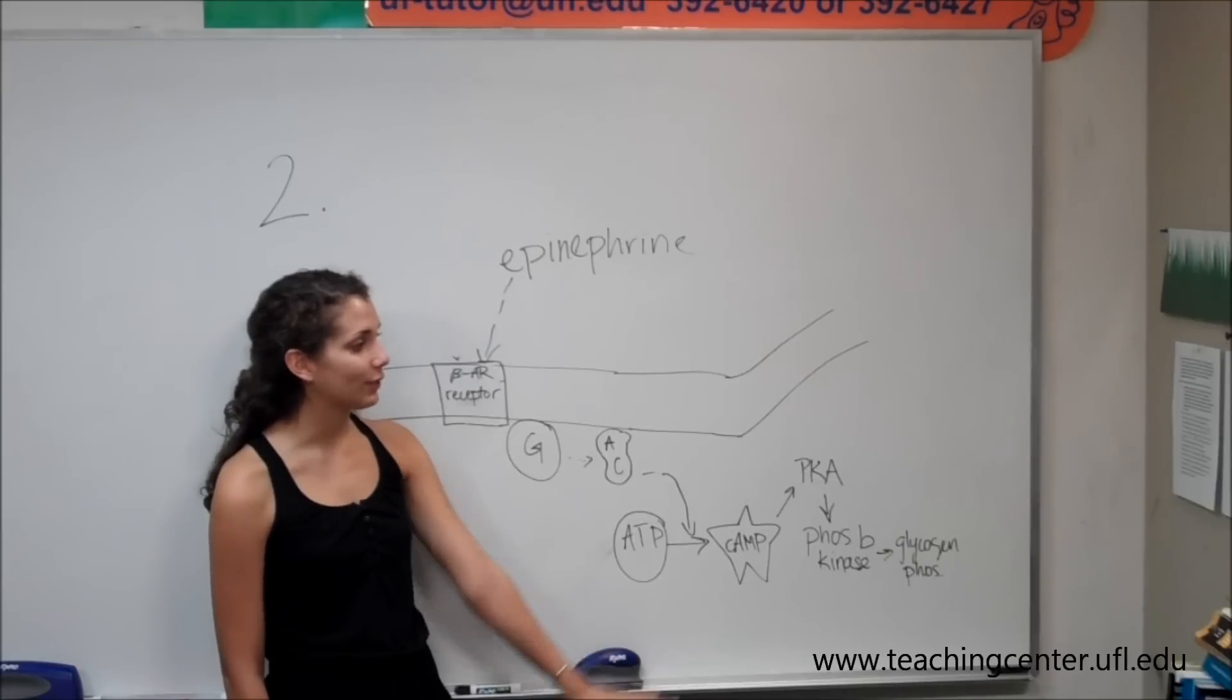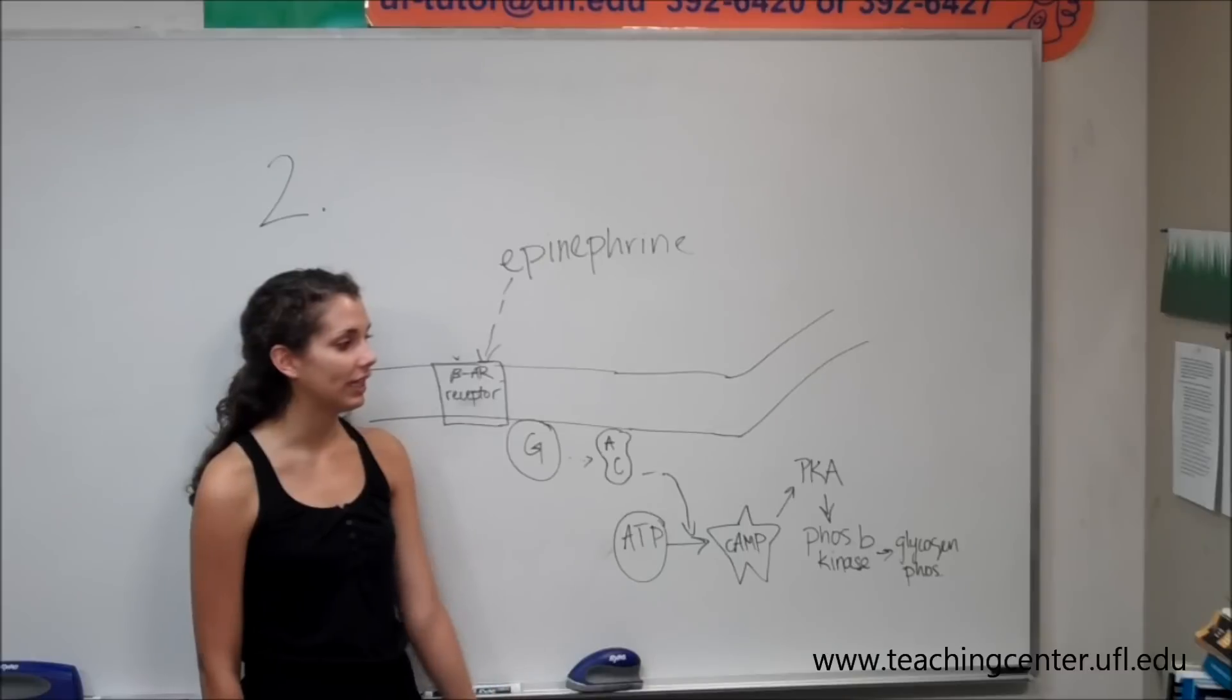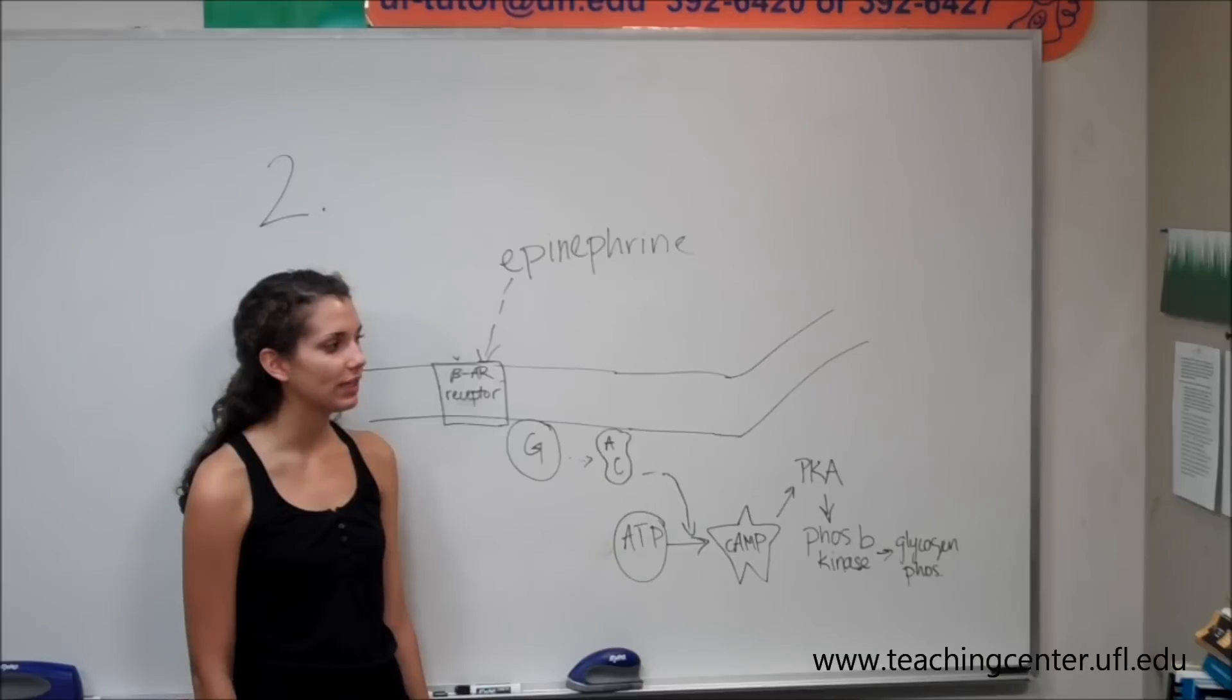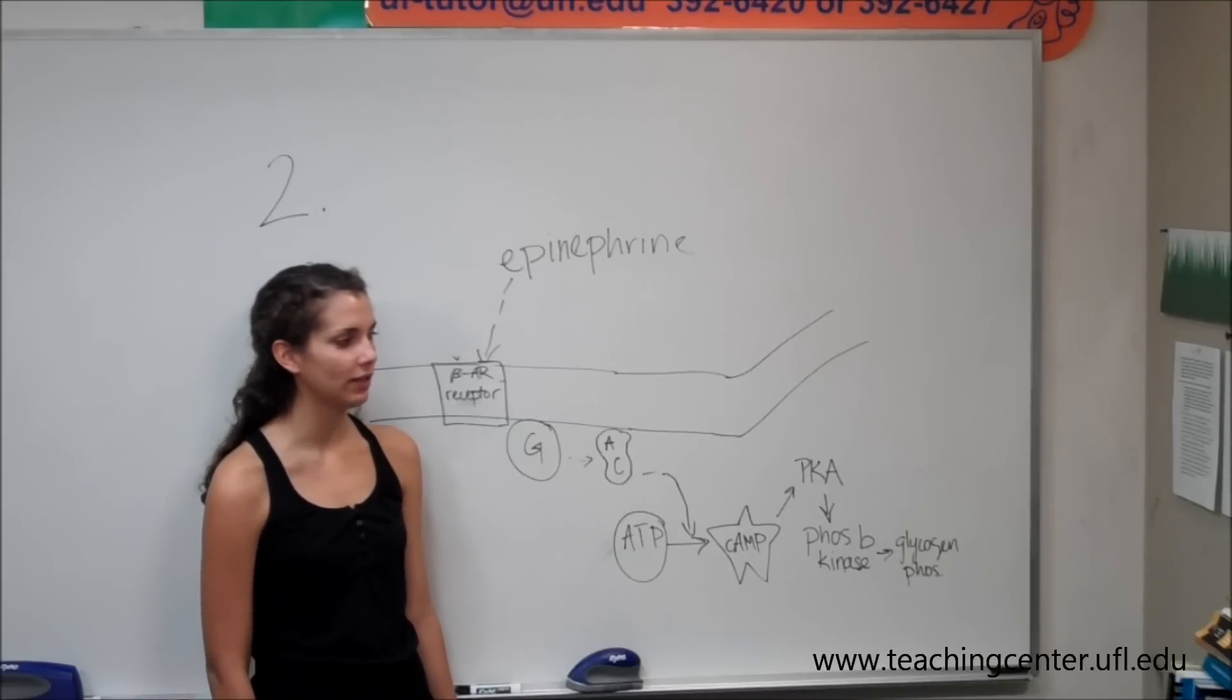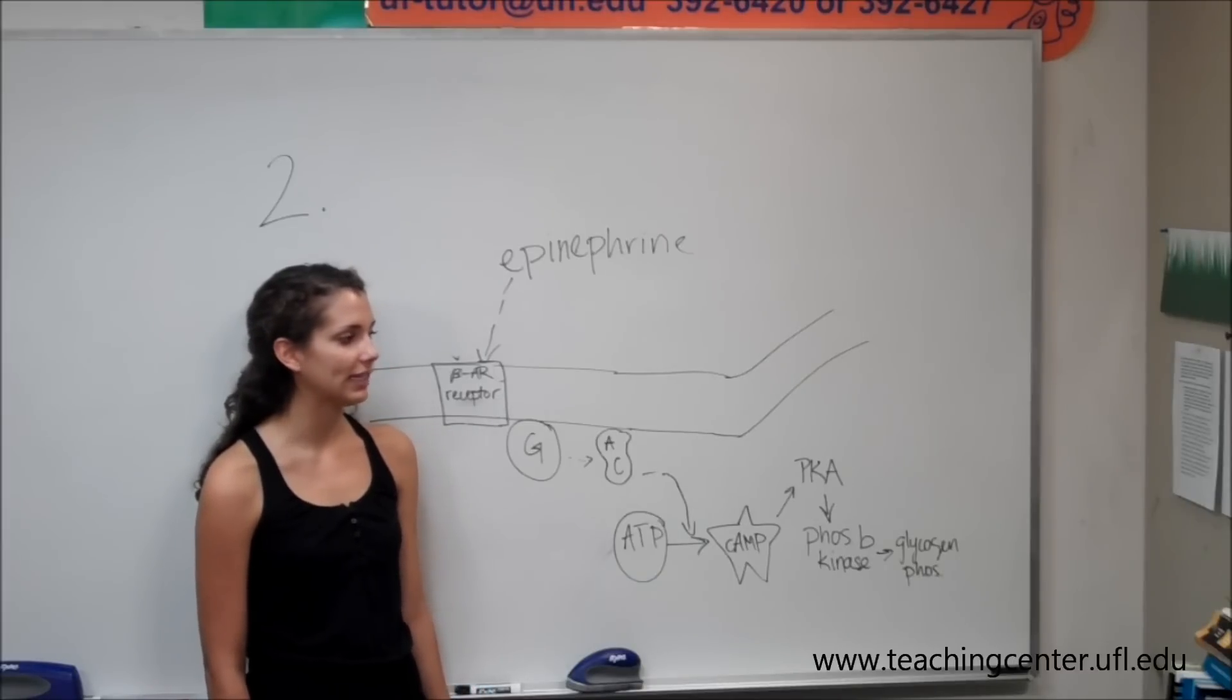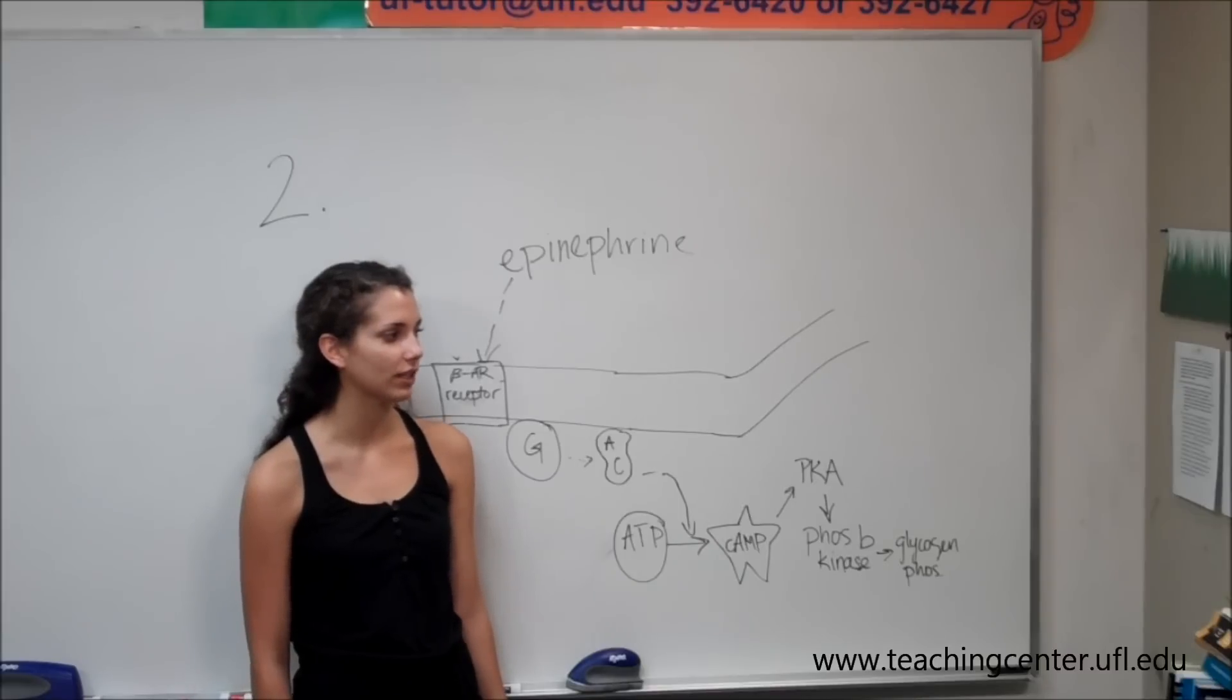Going on to part C, substance X was heat stable. That is, heat treatment did not affect its capacity to activate phosphorylase. And as a hint, it says, would this be the case if substance X were a protein? Substance X was nearly identical to a compound obtained when pure ATP was treated with barium hydroxide, which removes phosphates by hydrolysis.